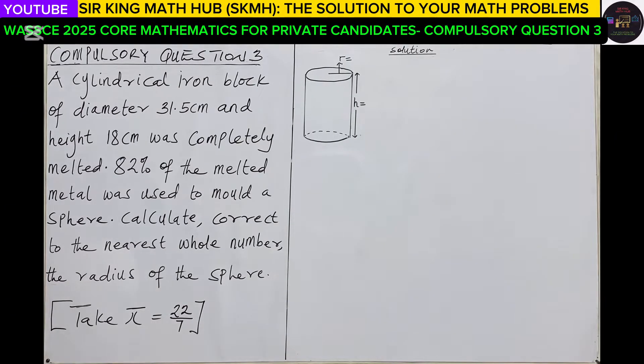A cylindrical iron block of diameter 31.5 centimeters and height 18 centimeters was completely melted. After melting, 82% of the melted material was used to mold a sphere. You have to calculate, correct to the nearest whole number, the radius of the sphere.